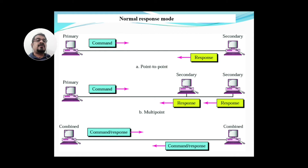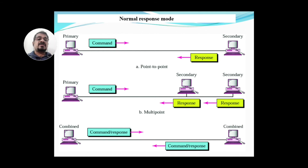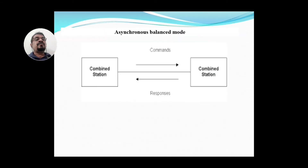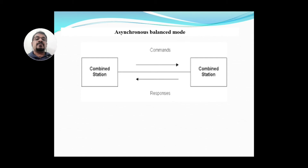The last figure shows Asynchronous Balanced Mode, where all devices are configured as combined devices. Combined devices can send both commands and responses. In ABM configuration, there is one combined station on the left-hand side and one on the right-hand side, and they can send both commands and responses to each other.